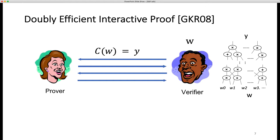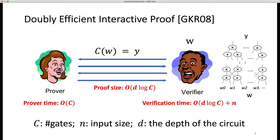In the GKR protocol, the verifier delegates the computation of a circuit C to the prover. The function C can be formalized as an arithmetic circuit, and the input W is known to the verifier. The prover time is quasi-linear — polynomial of the circuit size C in the original GKR paper, improved to linear of the circuit size in Libra. The proof size is D times log C, while the verification time is D times log C plus N. The circuit size C is the number of gates in the circuit, D is the depth of the circuit, and N is the input size.